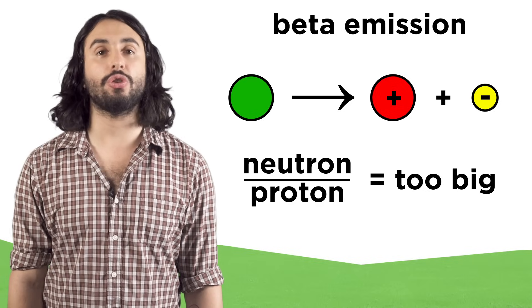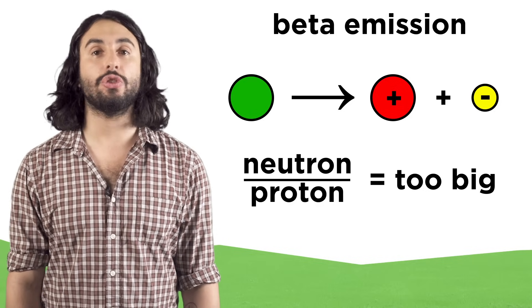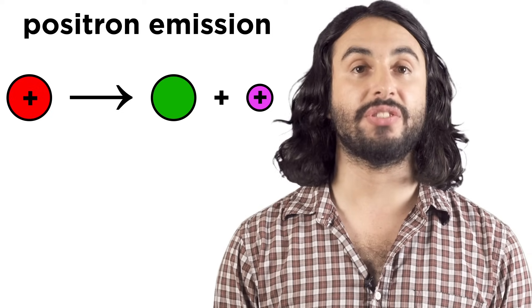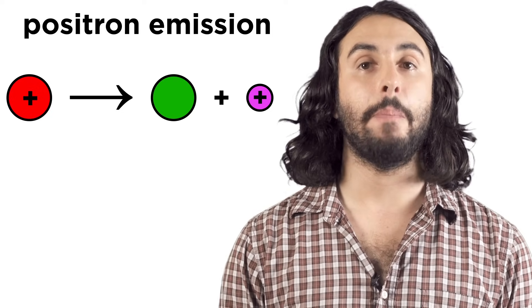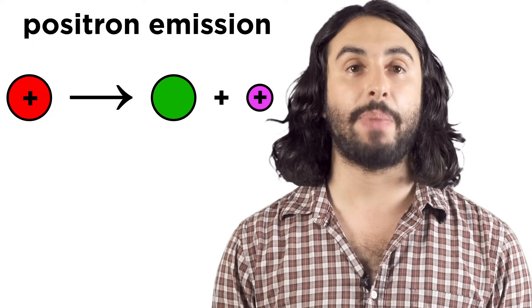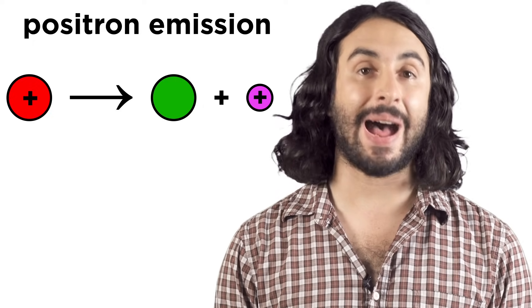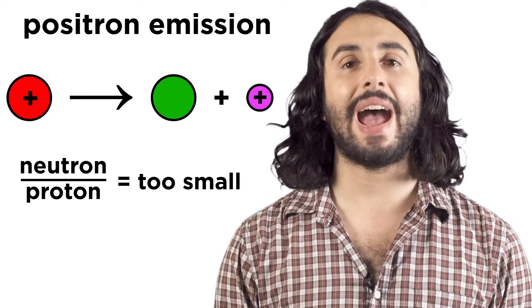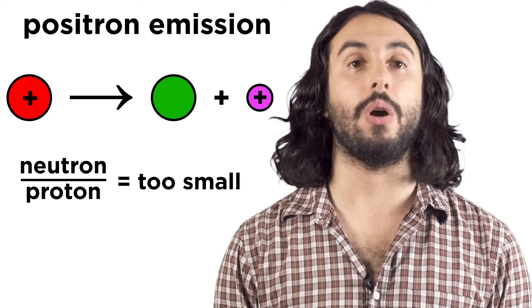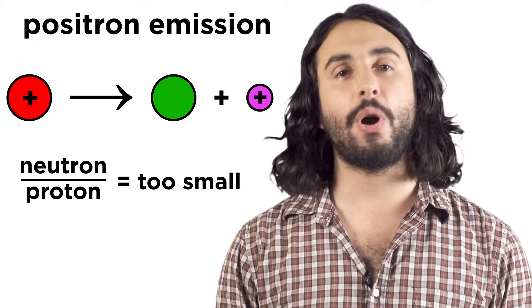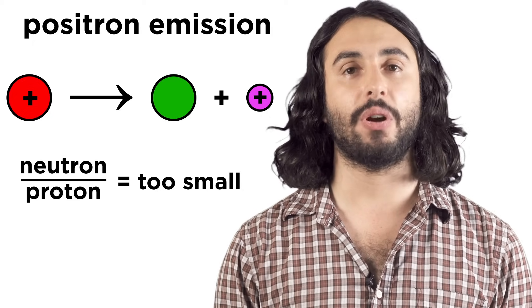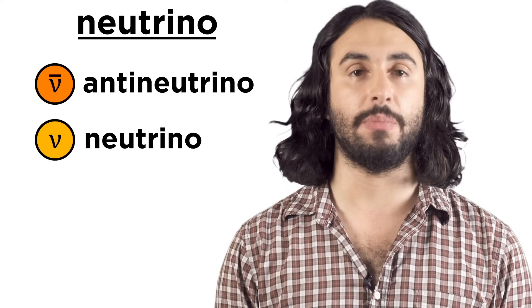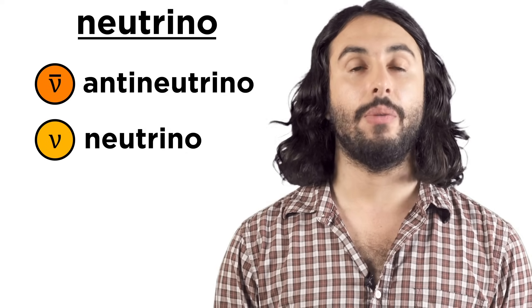A nucleus would do this if the neutron to proton ratio was too high, meaning too many neutrons, as this would adjust that ratio favorably. Positron emission is just the opposite, when a proton becomes a neutron. This will emit a positron because this is the process that is the opposite of beta emission, and a positron is the opposite of an electron. This would happen if the neutron to proton ratio was too low, meaning too many protons. With both of these types of decay, there is also a tiny particle called a neutrino that is emitted. In beta emission it's an anti-neutrino, and with positron emission it's a regular neutrino. More on that in particle physics.